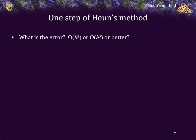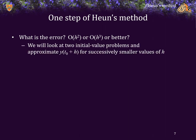What's the error of Heun's method? Is it better or worse? Recall that the Riemann sum approximation had an error that was order h squared, whereas the trapezoidal rule had an error that was order h cubed. The error of Euler's method was order h squared. Is the error of Heun's method order h squared, order h cubed, or possibly even better? We'll look at two initial value problems and approximate y at t-naught plus h for successively smaller values of h to see how much better we do.